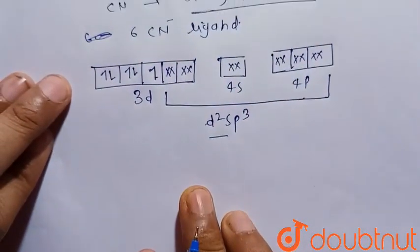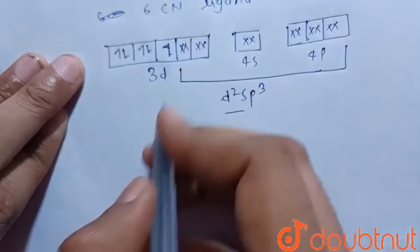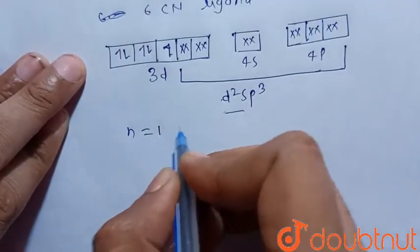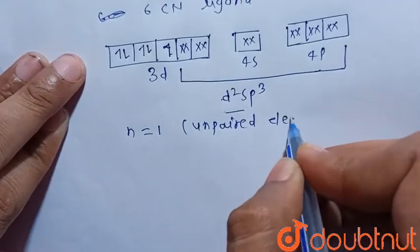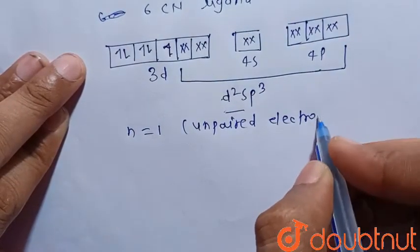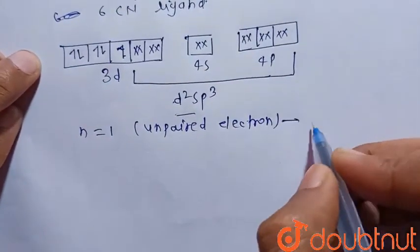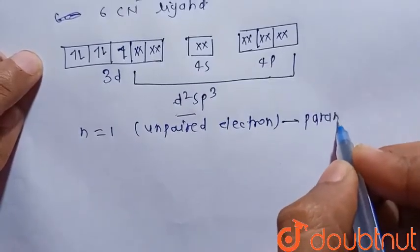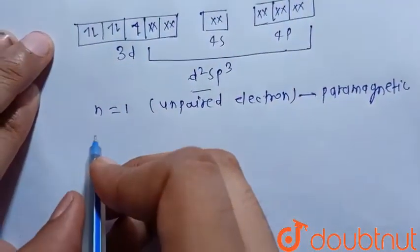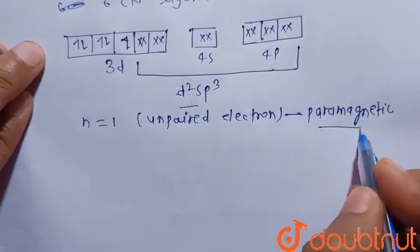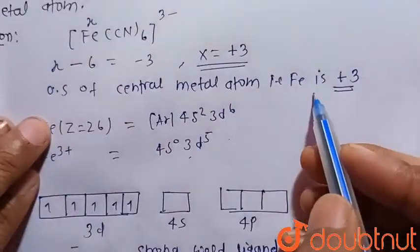So the hybridization is d²sp³. There is one unpaired electron (n = 1), so the complex is paramagnetic. To summarize: hybridization is d²sp³, the complex is paramagnetic, and the oxidation state of the central metal atom, iron, is +3.